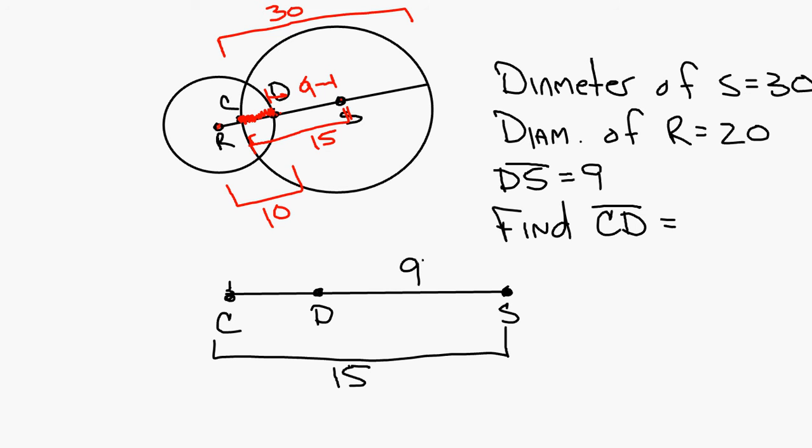It's the segment addition postulate. X plus 9 has to equal 15. So if you did that, a lot of you did it in your head, you subtract 9 from the 15, and your X was equal to 6, which was CD. Okay?